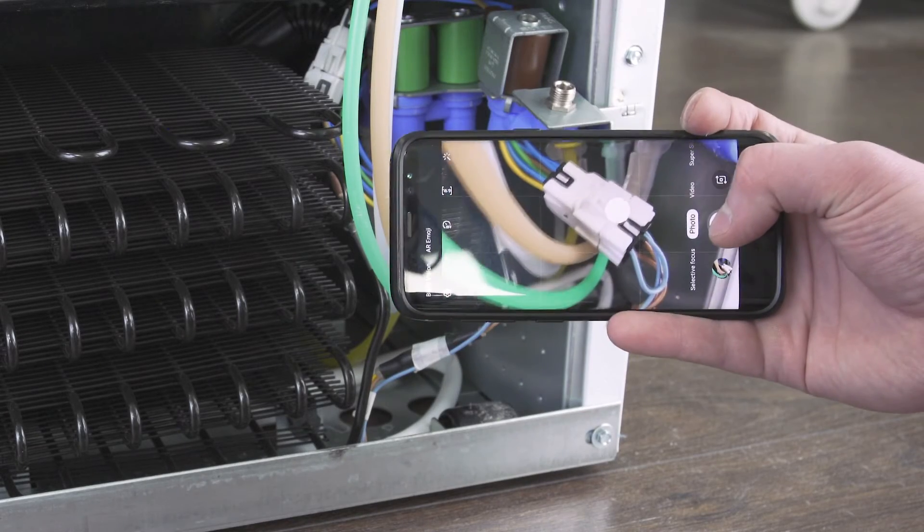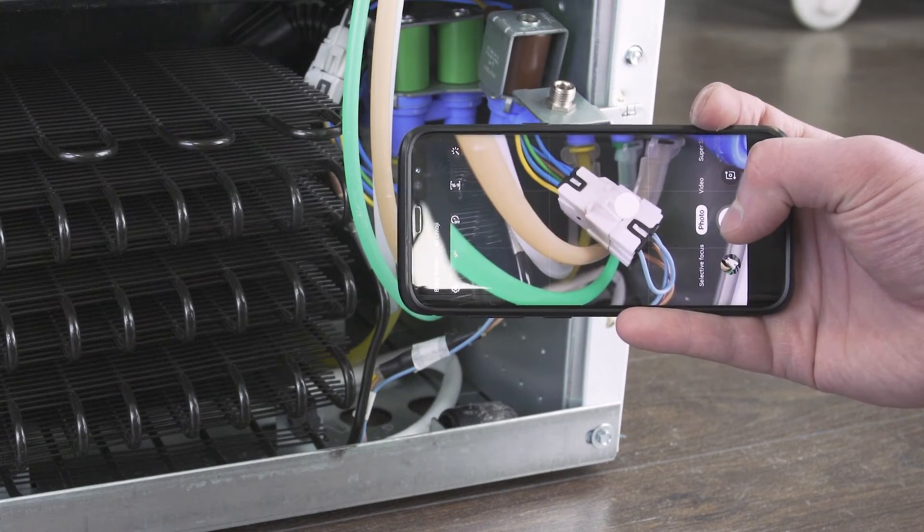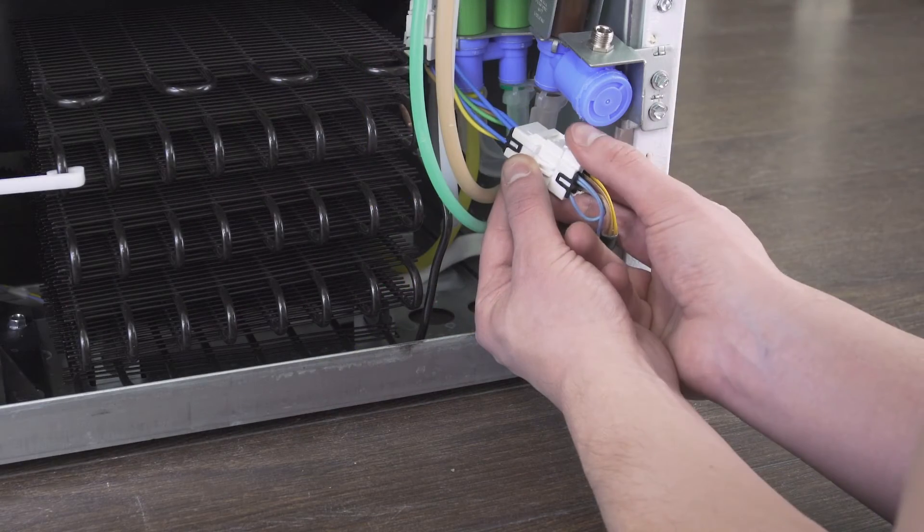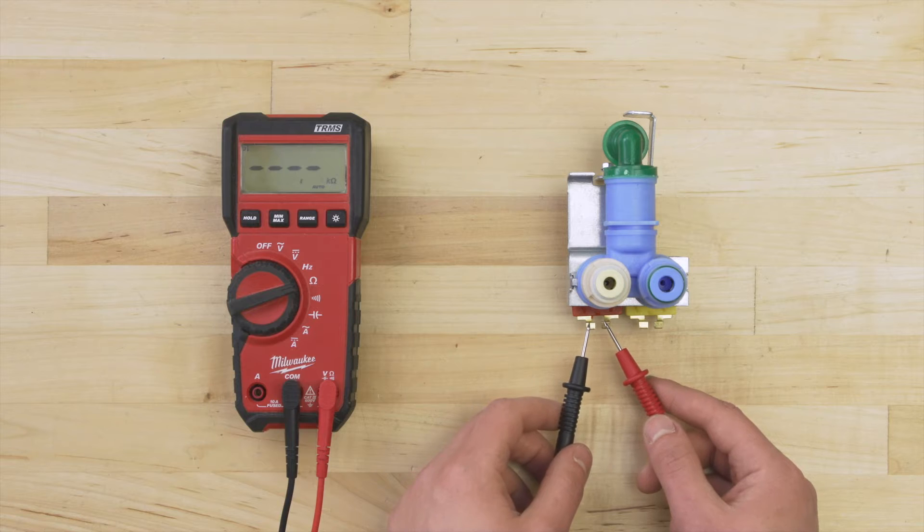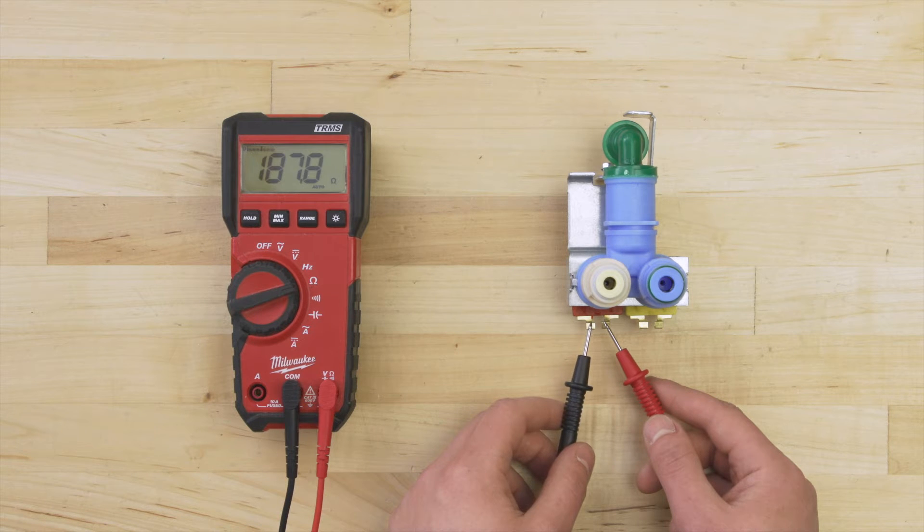It's best to take a picture of the wires for reference. Now disconnect the wire harness. In some models, you might have to unscrew the assembly to test the wire terminals directly.